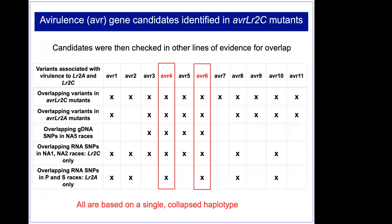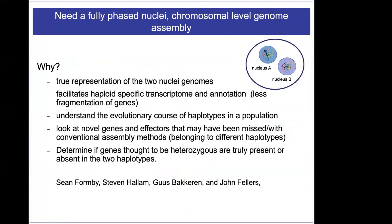What I really needed was a fully phased genome where we could separate the haploids into two separate nuclei, because what I and others were seeing was that the assemblies we had were missing a lot. Peter Dodds mentioned that they tried to find one effector and it was just missing. So the goal of a true diploid assembly is: it provides a true representation of the two nuclei, facilitates haploid-specific transcriptome and annotation, helps understand the evolutionary course of haplotypes in a population, and allows us to identify novel effectors and determine what genes are truly heterozygous versus absent in one genome and present in the other.